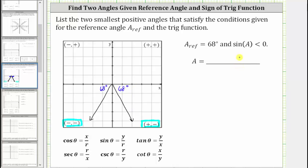Any angle that has a terminal side here in the third quadrant or here in the fourth quadrant would satisfy these two conditions, but we're asked to find the two smallest positive angles to satisfy these two conditions.